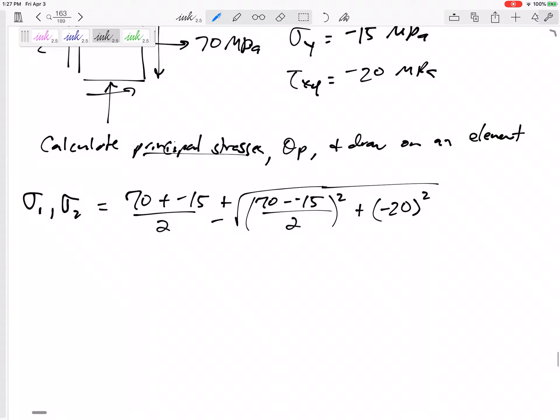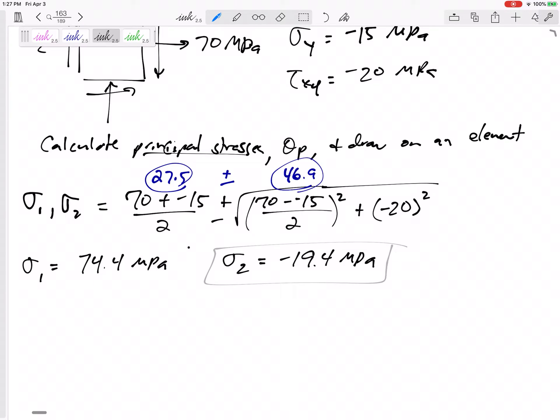And let me give you some numbers because this will be helpful for us. This is 27.5 plus and minus 46.9. So sigma 1 would be 27 plus 46.9, which is 74.4 MPa. Sigma 2, generally sigma 1 is the larger one, sigma 2 is the smaller one, would be the 27.5 minus 46.9, negative 19.4 MPa. Those are the principal stresses; that's a maximum stress at any orientation.